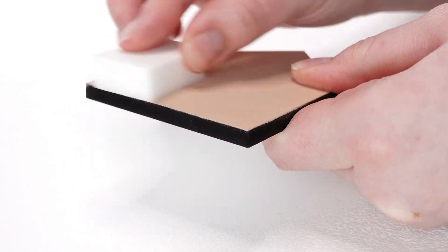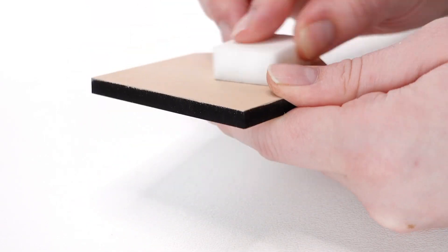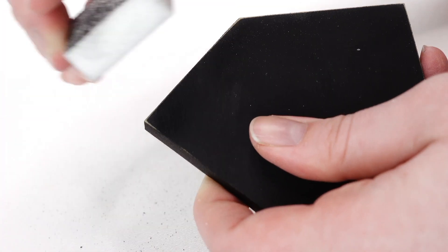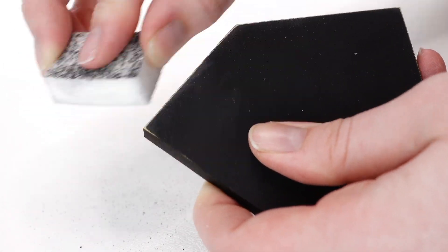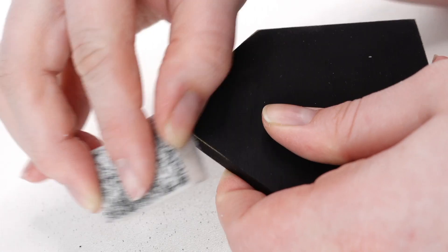To smooth the finish, hold a sanding block flat against the surface of your piece and sand lightly. To add distressing and bring out the dimension of your pieces, sand at about a 45 degree angle along the edge.